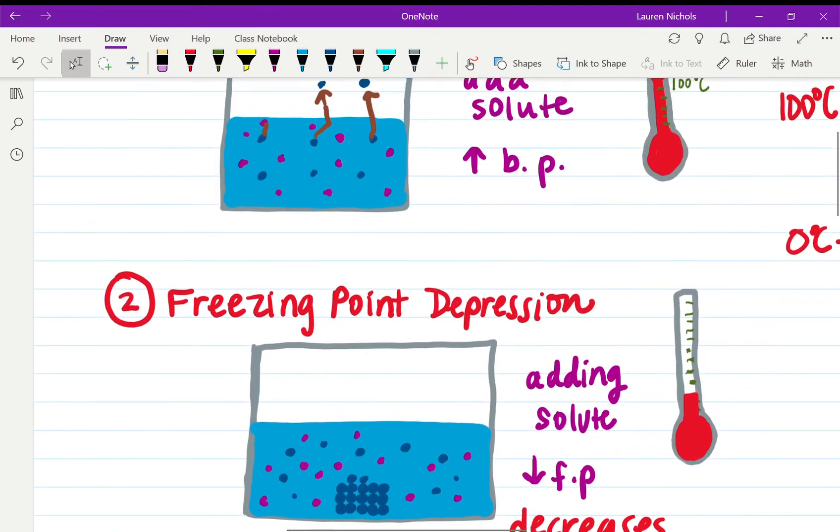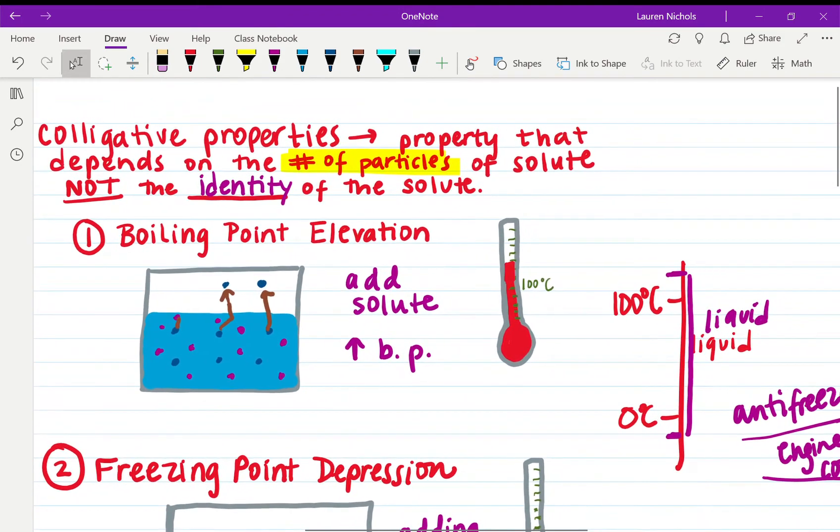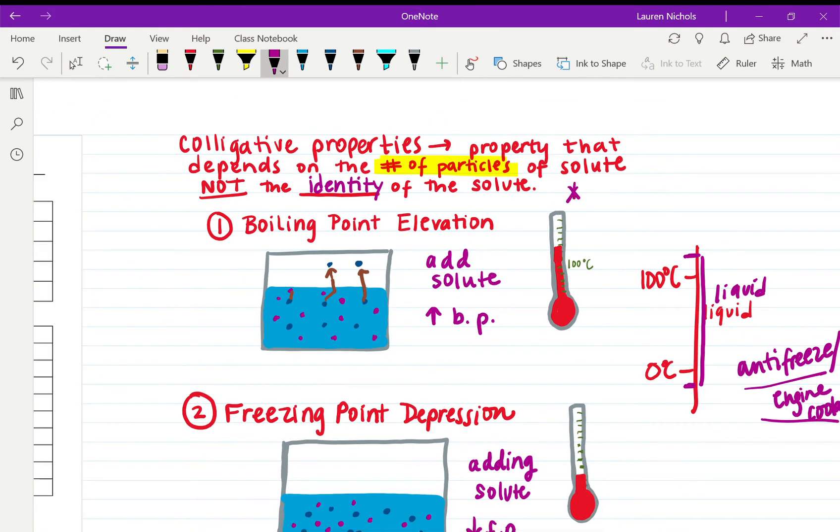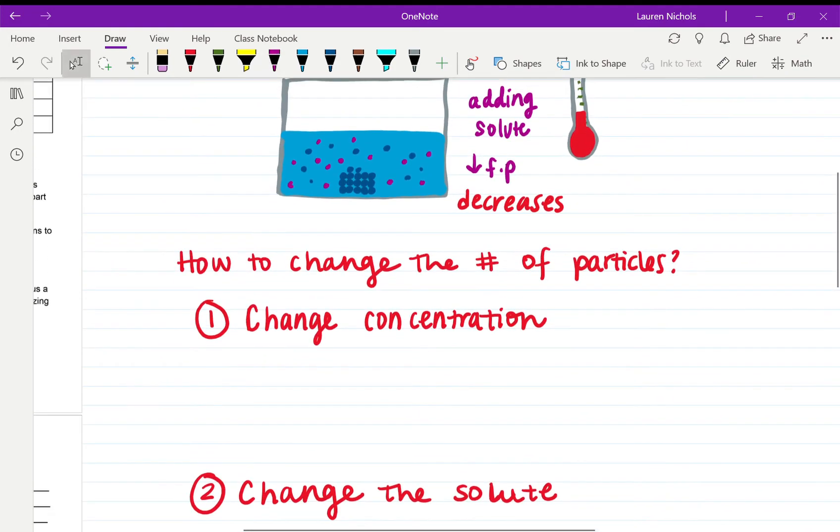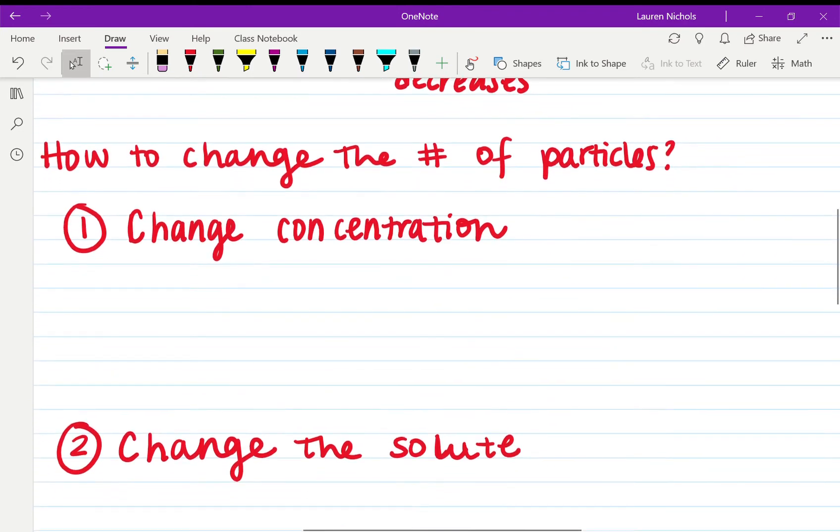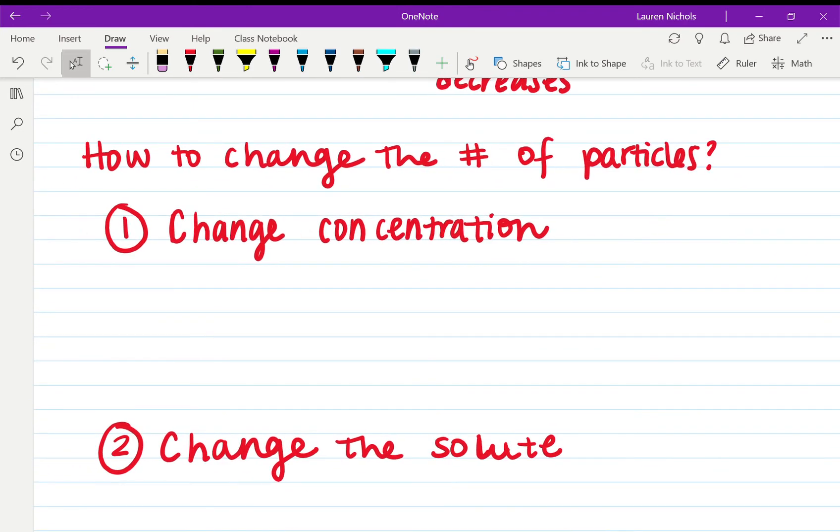Your colligative properties are based on the amount. A key note here is that the more particles there are, the more dramatic the effect, meaning the larger the effect it will have. So how do we actually change the number of particles? There are two ways we can change the concentration.